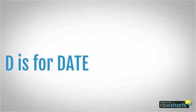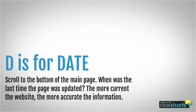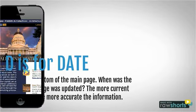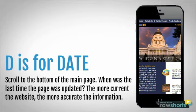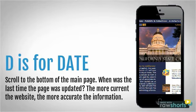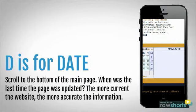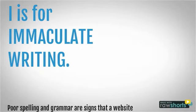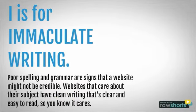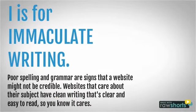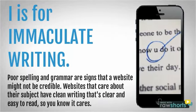D is for date. Scroll down to the bottom of the web page and make sure that it's been updated recently. The more current the website, the more accurate the information. If you see 2009 at the bottom, it's probably not a good page to use.